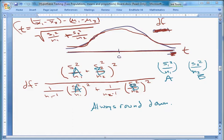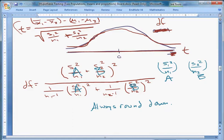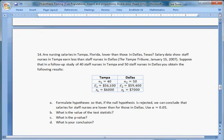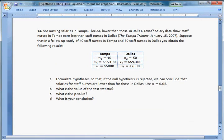A few notes: this works very well even for small sample sizes unless you have very skewed populations or outliers. Let's look at a practice problem to practice with this. I'm not sure we'll get through this whole thing, but we can at least calculate the degrees of freedom. Are nursing salaries in Tampa, Florida lower than those in Dallas, Texas? Salary data show staff nurses in Tampa earn less than staff nurses in Dallas. Suppose in a follow-up study of 40 staff nurses in Tampa, 50 staff nurses in Dallas, you obtain the following results.